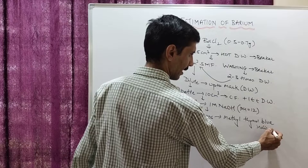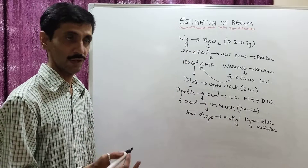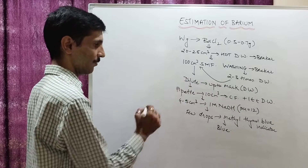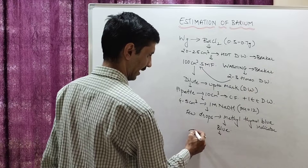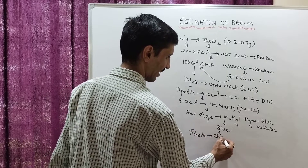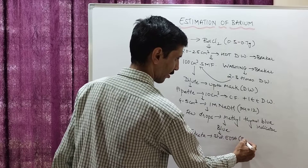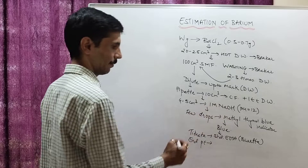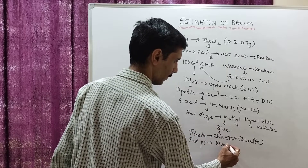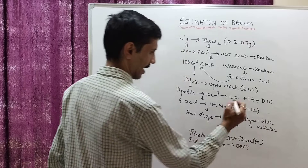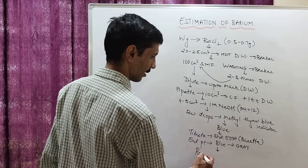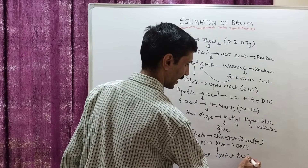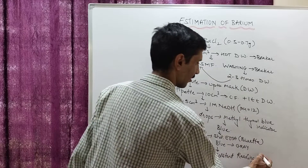As soon as you add the methyl thymol blue indicator into the conical flask solution, the color is going to become blue. Now titrate this blue color solution with the standardized EDTA from the burette. The end point, as mentioned in the theory, is from blue to gray. Then report the constant reading — also called the constant burette reading (CBR).